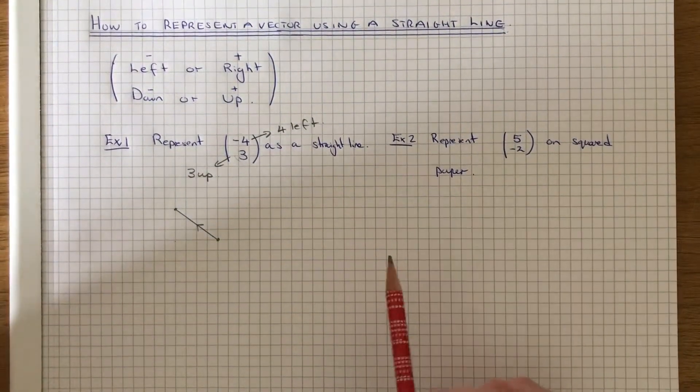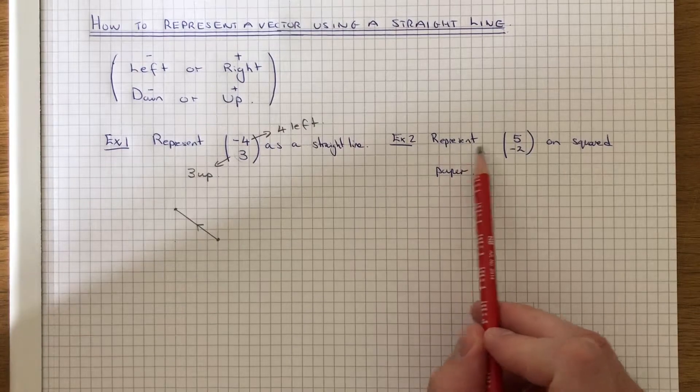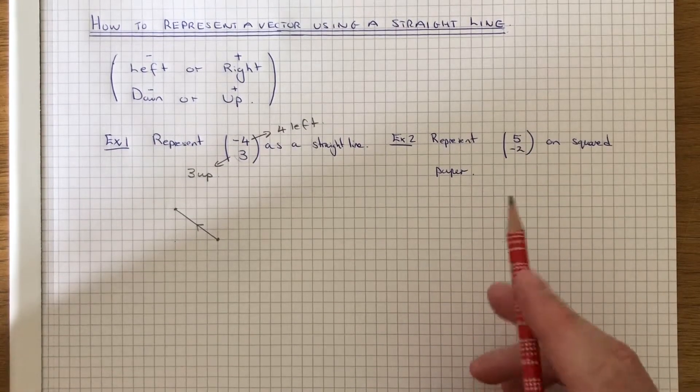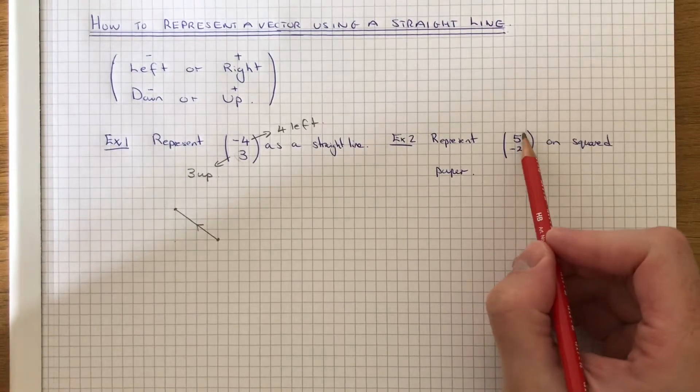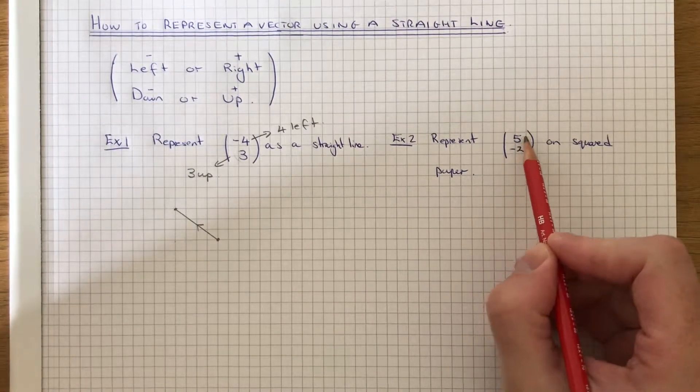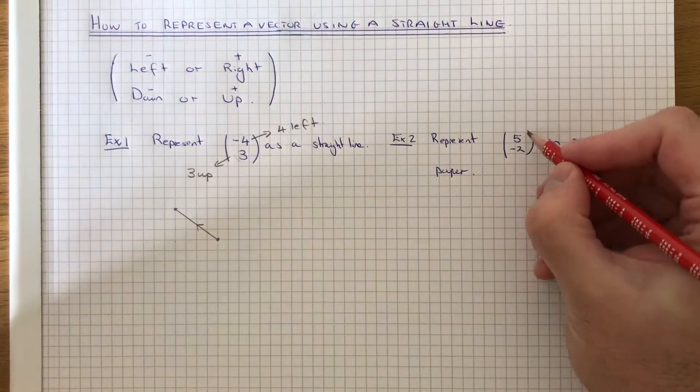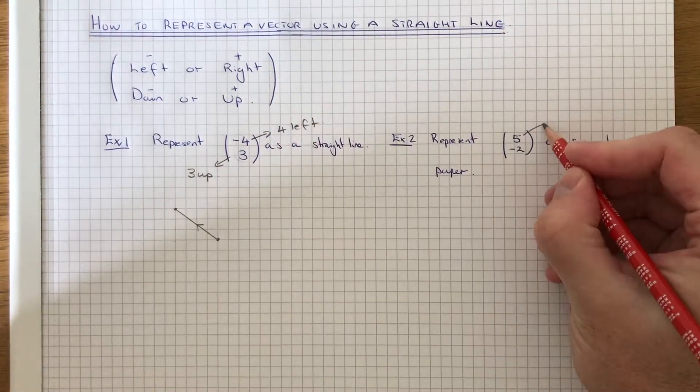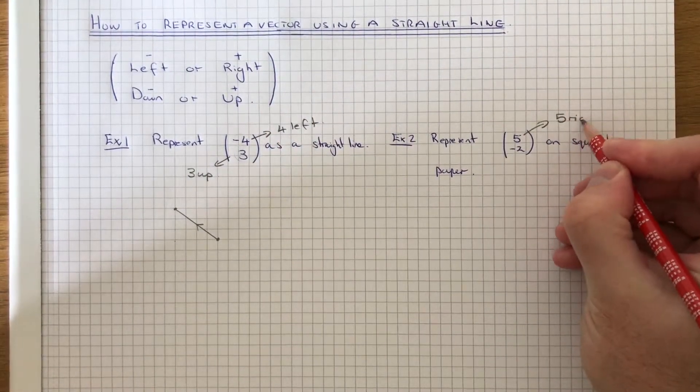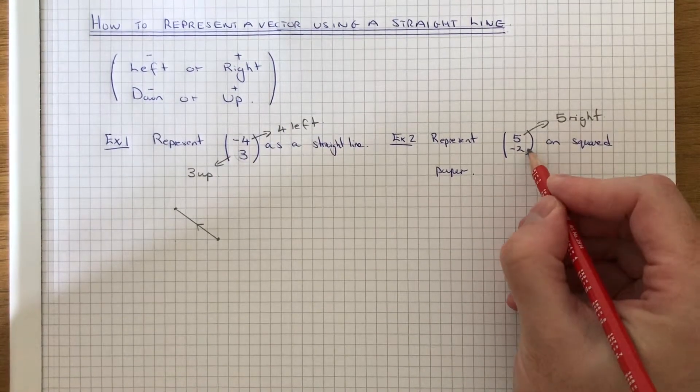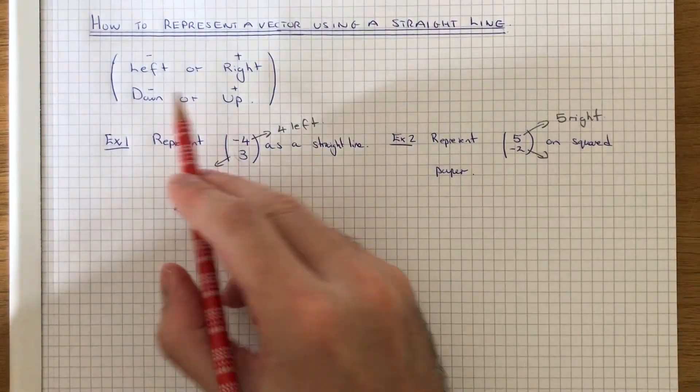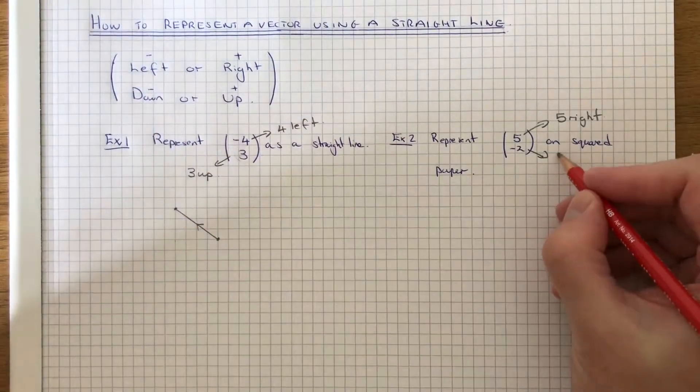Let's move on to example 2. We've got to represent (5, -2) on squared paper again as a straight line. Let's have a look at the top number first of all. This top number is positive, so this means move it 5 to the right. And the bottom number of the vector is negative, so we've got to move the point 2 squares down.